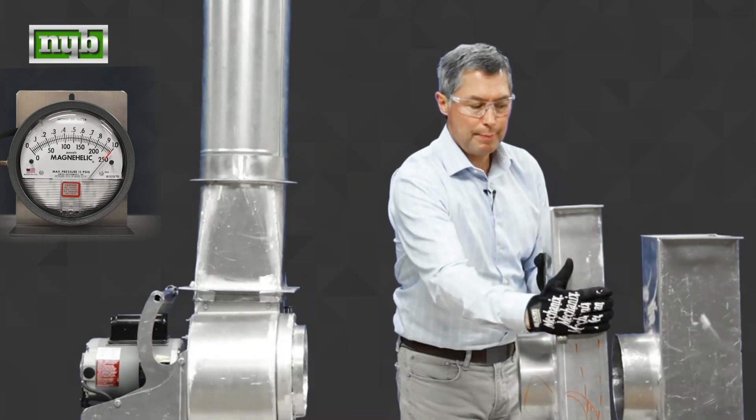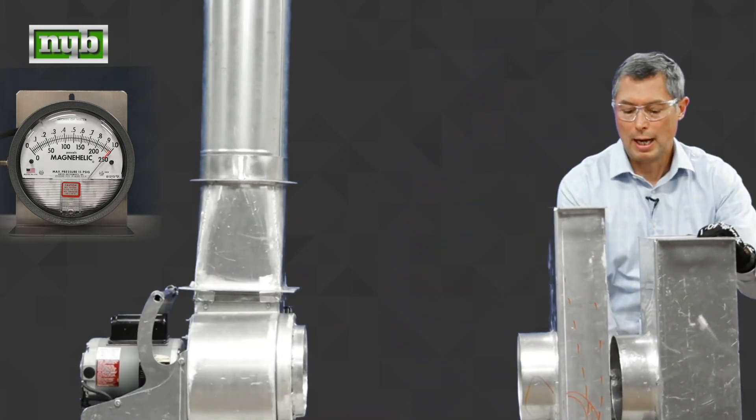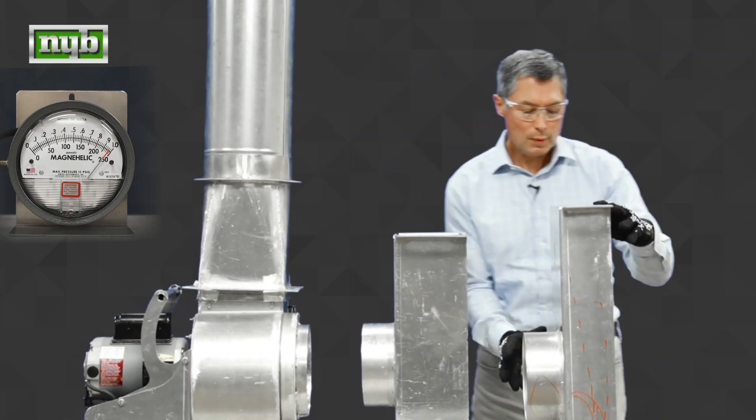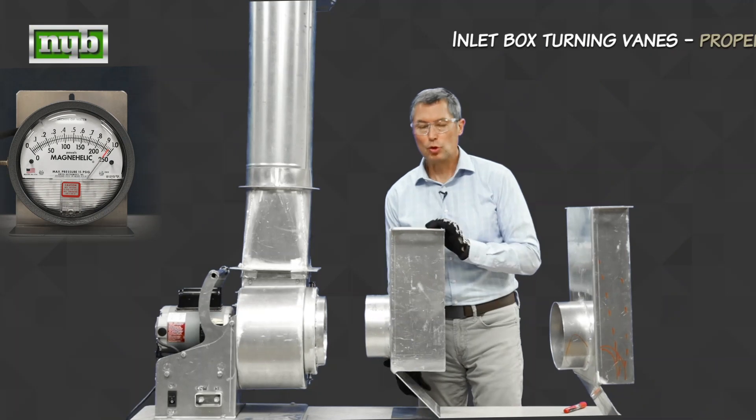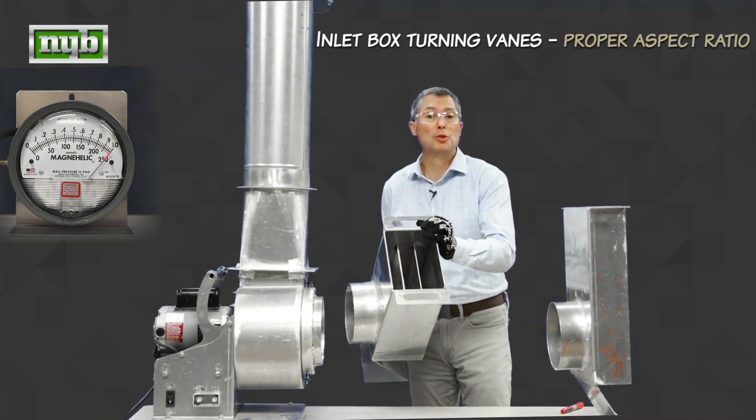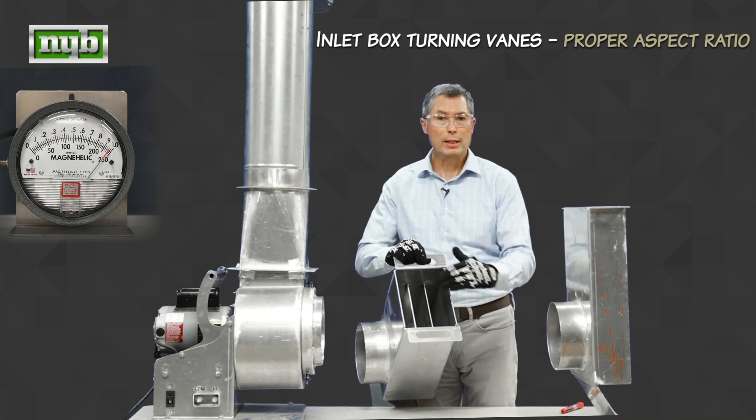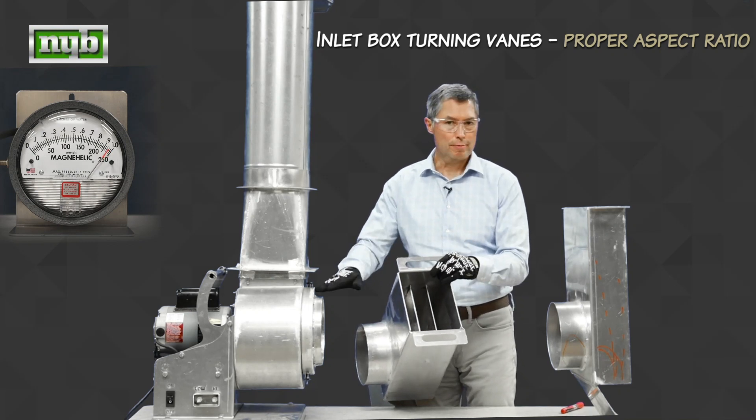Now let's see what happens when we put a proper inlet box on there. Notice that the aspect ratio has changed. Its width compared to its depth is much more square-like. That allows for more air to enter into the box and enter into the fan.